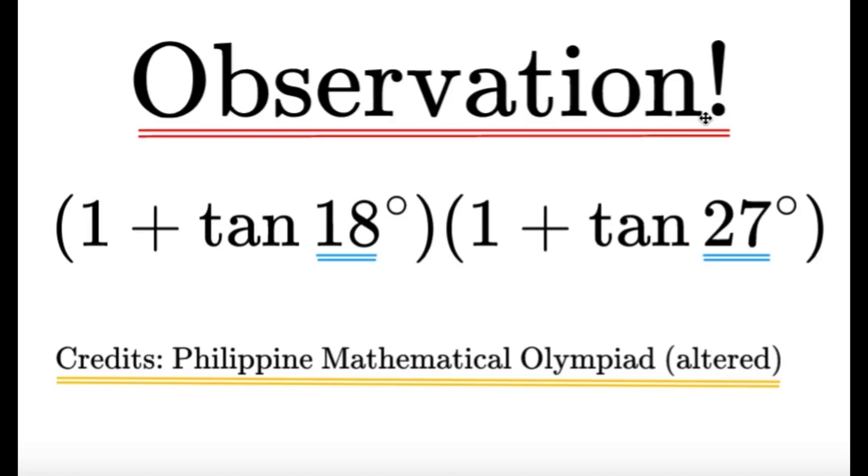Because if you're going to ask me what are the values of tangent 18 degrees and tangent 27 degrees, I don't know. The only thing I can do is type it in a calculator and give you an approximated value. But to give you the exact value of both, that's practically impossible for me to do. So, given that this item came from the Philippine Mathematical Olympiad, there might be a nice trick here. And a nice trick always starts with a very nice observation.